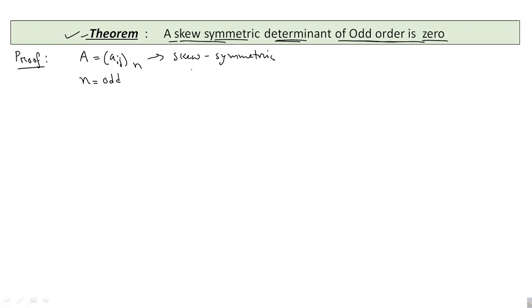Now, we know that if a matrix is skew symmetric, then it means that A transpose will be equal to negative of the original matrix. And here the elements follow the rule that each aij will be equal to minus aji.